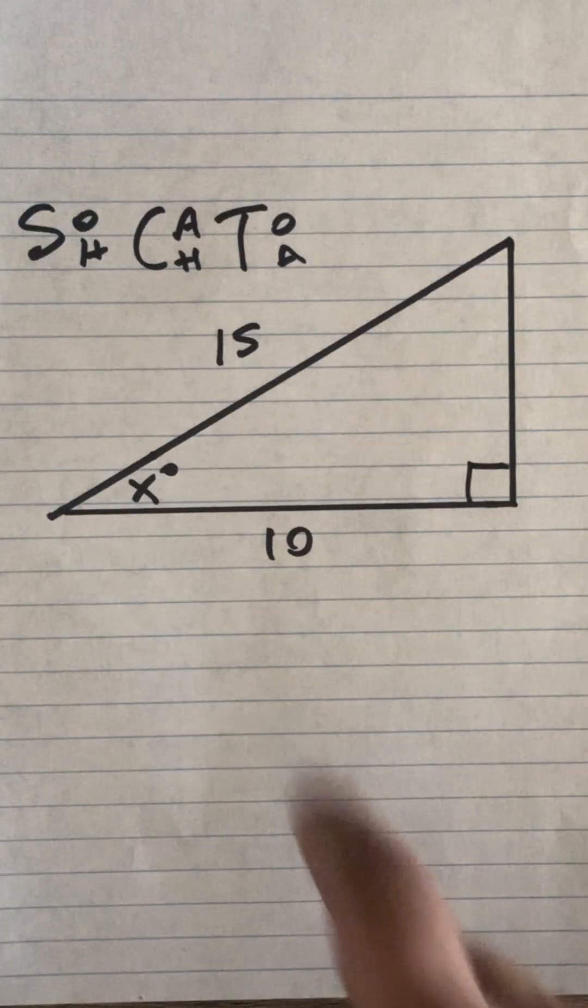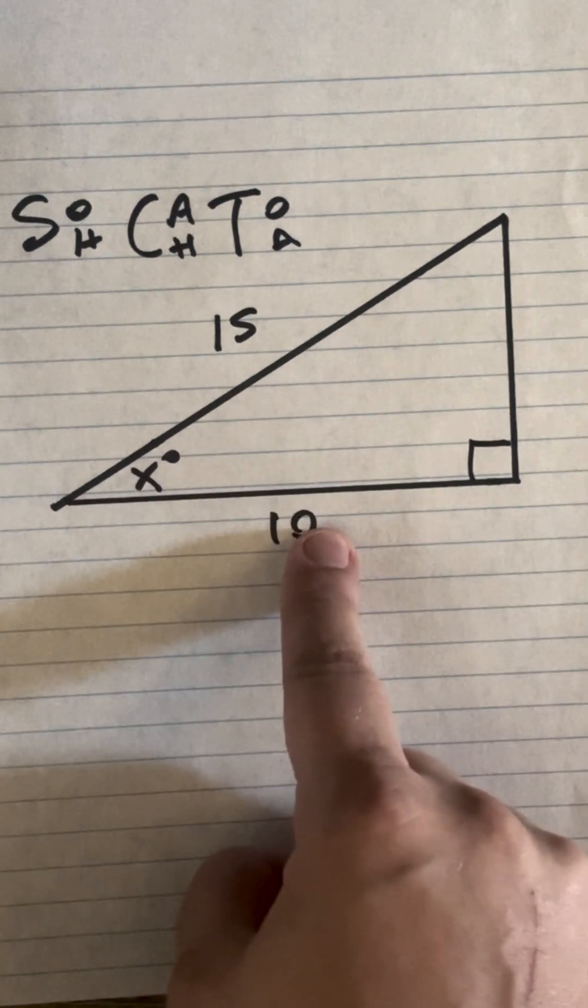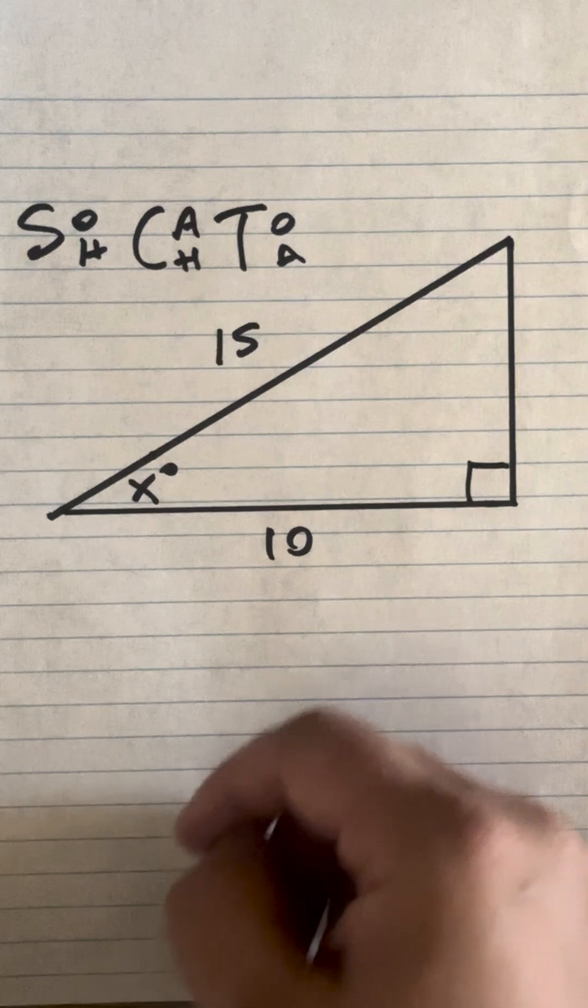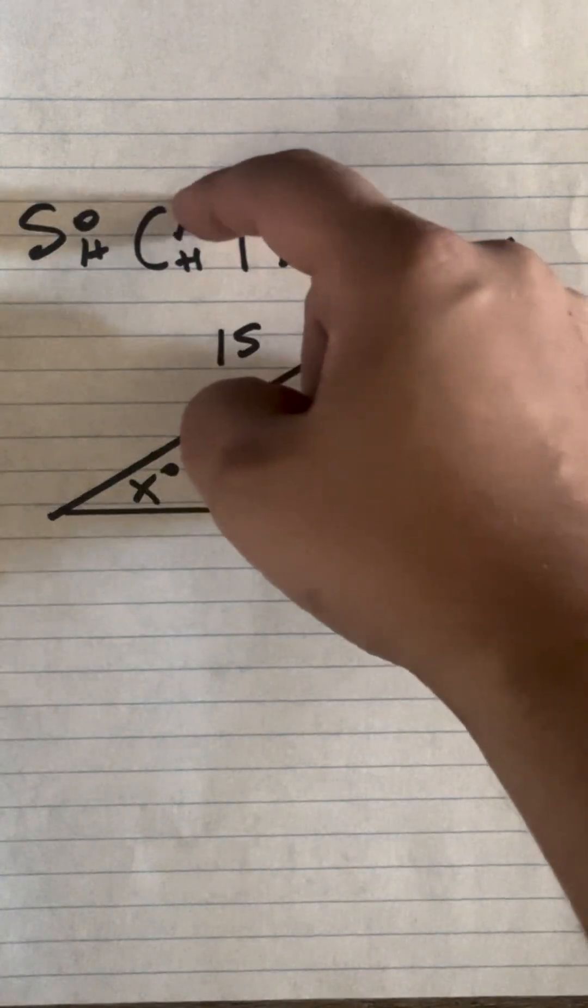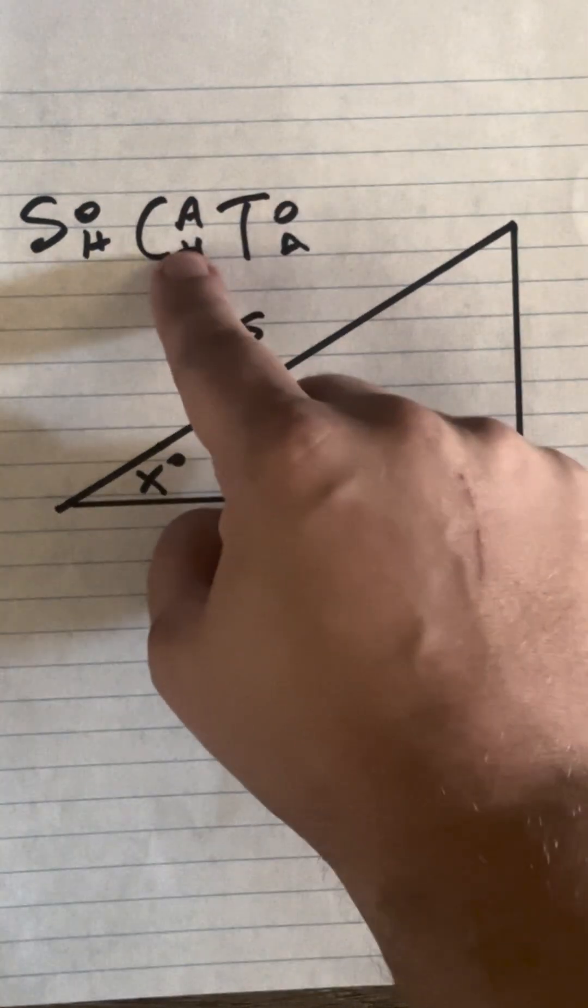Let's solve this triangle. So we have the angle here. The adjacent is 10 and hypotenuse is 15. So if we look up here, it's SOCATOA adjacent hypotenuse. So we're going to use cosine.